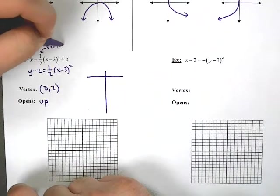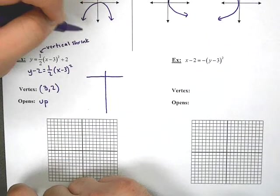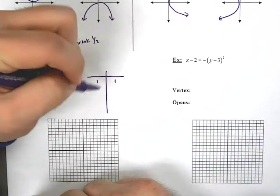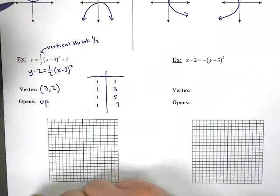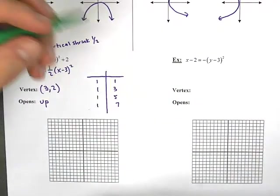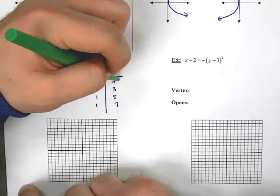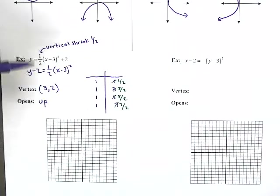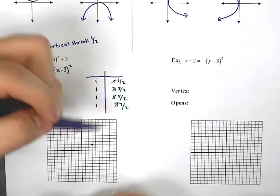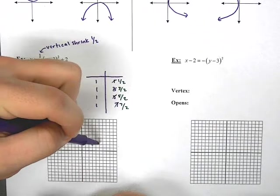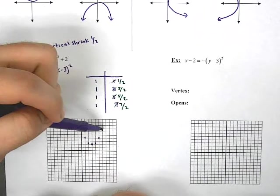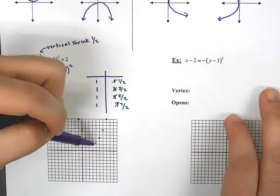Remember, this is a vertical shrink of one-half. So we would use the growth pattern: 1, 1, 1, 3, 1, 5, 1, 7. But with the vertical shrink, we actually go one-half, three-halves, five-halves, seven-halves. So I plot my vertex at (3, 2), and now I'm going over 1 up a half, over another one up three-halves, over another one up five-halves, and I plot that last one. I now have a parabola. That should be pretty similar to what we did way back when.